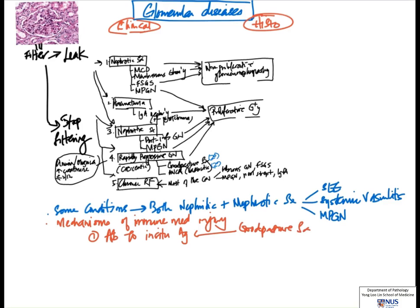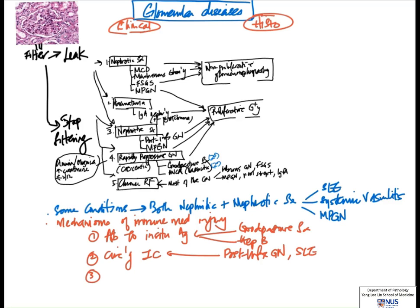The antigen can be there originally or planted by an infectious agent. Goodpasture syndrome is when the glomerular basement membrane itself is the antigen; hepatitis B is an example of a planted antigen. The second mechanism involves circulating immune complexes (antibody-antigen complexes) already in the blood that get trapped in the glomeruli — examples include post-infectious glomerulonephritis and SLE. The third mechanism is when antibodies bind to cellular antigens in the glomerulus, such as antineutrophil antibodies (ANCA) seen in systemic vasculitis.